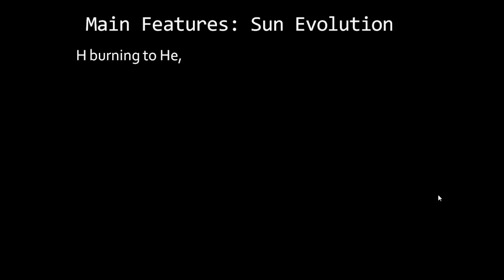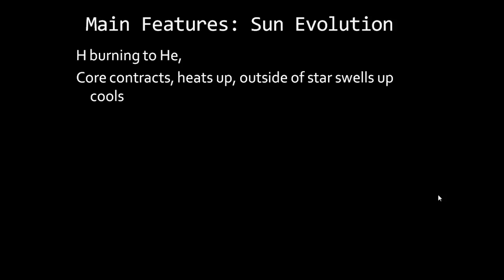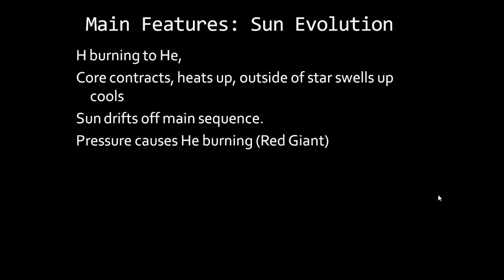The main features of Sun evolution: as soon as it reaches the main sequence stage there is the hydrogen burning state, where hydrogen is fused to helium. Then as it uses up the hydrogen, there's less radiation pressure and the core will contract and heat up. As it heats up, the outside of the star swells up and cools, so the star becomes more luminous and redder, and at that point it drifts off the main sequence.